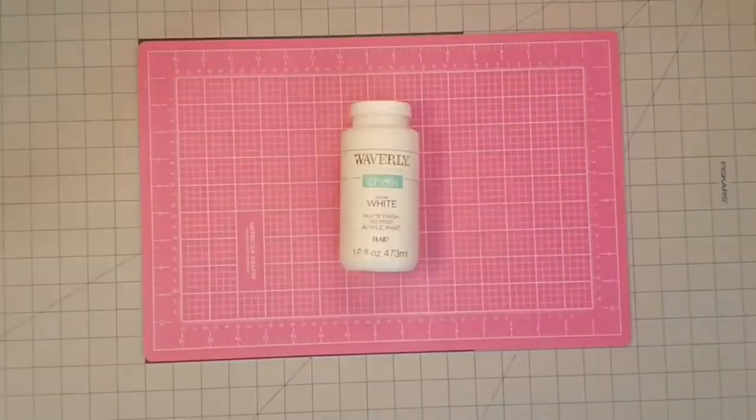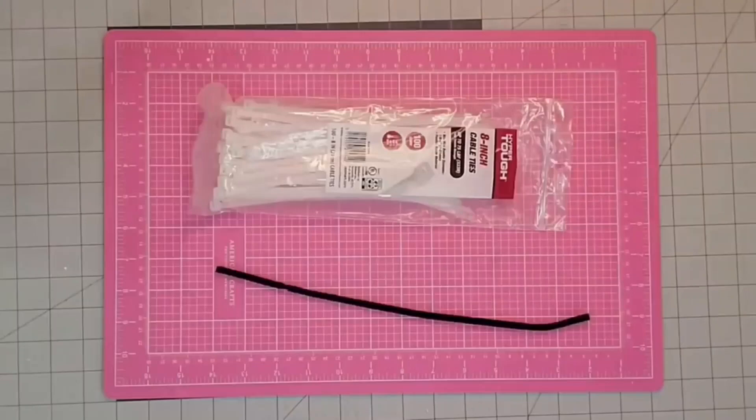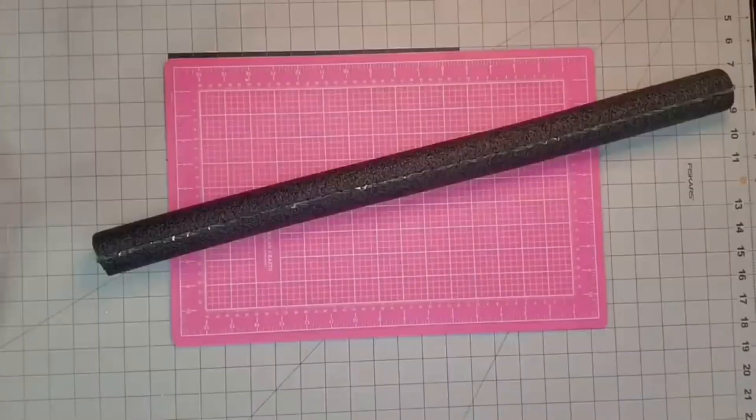Some Waverly white chalk paint, some zip ties and chenille stem. Some pipe insulation that I got at Lowe's recently and also my hot glue gun.